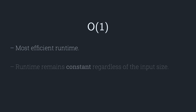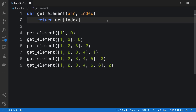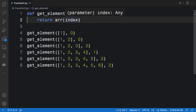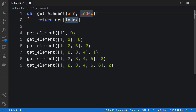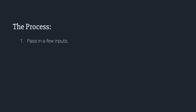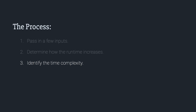An algorithm with a time complexity of O(1) is considered to be the most efficient because the running time remains constant regardless of the input size. Whenever I'm trying to decipher the running time of an algorithm, I like to follow a process. Step one is to pass in a few inputs. Step two is to determine how the running time increases with respect to the input size. Step three is to identify the time complexity.